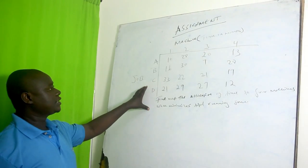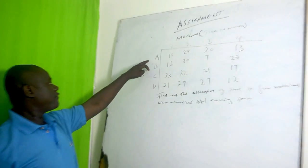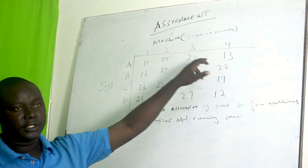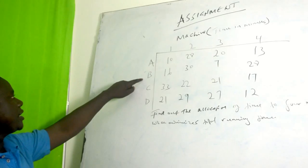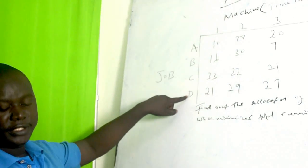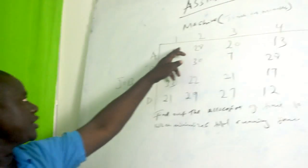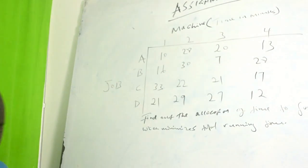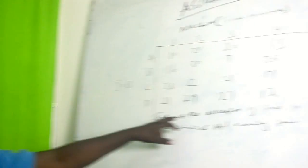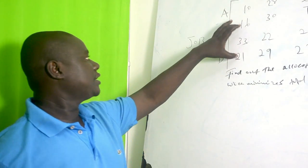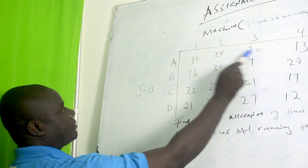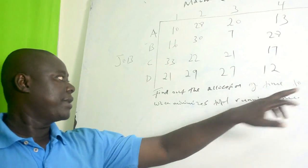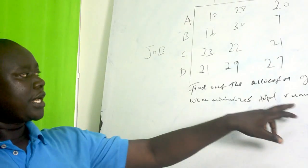You can be given an example like this. We have four jobs — job A, job B, job C, and job D. These jobs are assigned to four machines: machine 1, machine 2, machine 3, and machine 4. We are being asked to find out the allocation of time to four machines which minimize total running time. These numbers represent time.